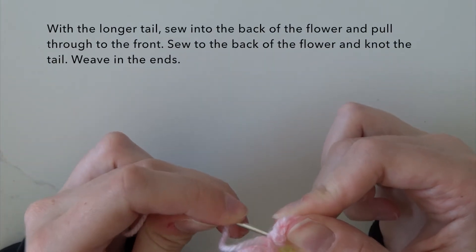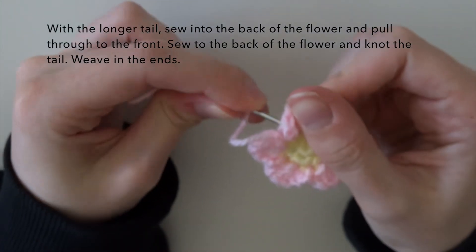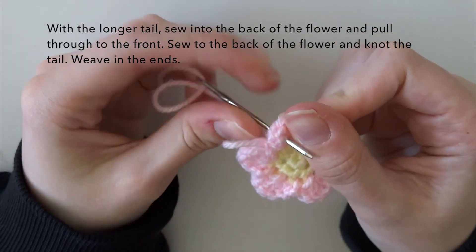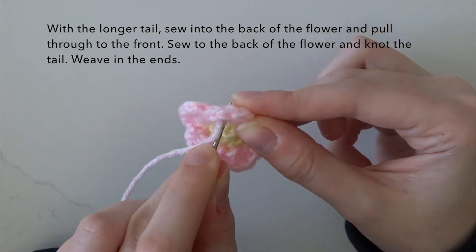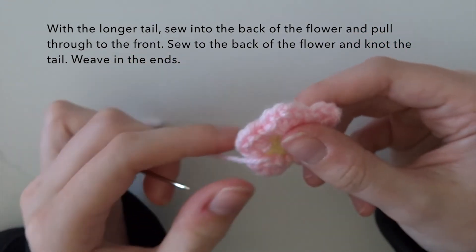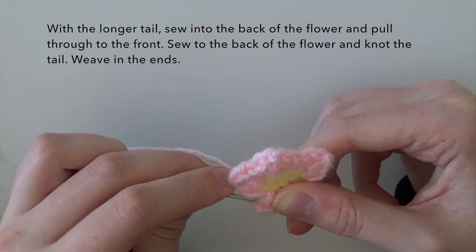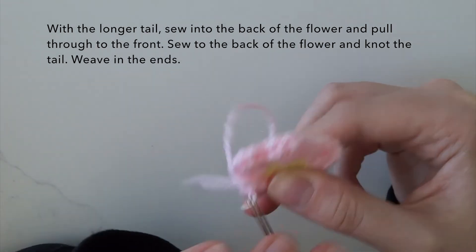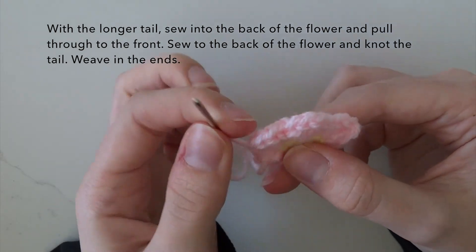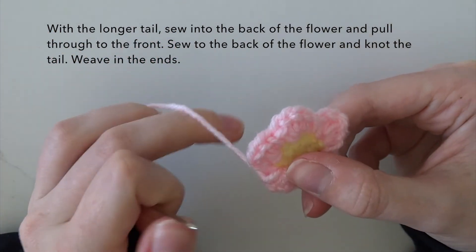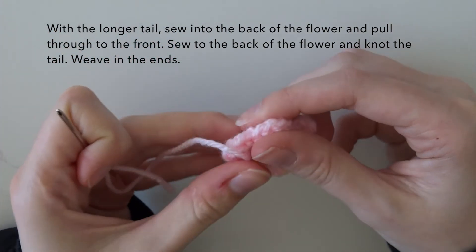With the final tail you want to sew from the back of the flower and pull it through to the front, and then sew from the front of the flower and take it to the back. You then want to fasten this together by creating a little loop and pulling through that loop. That creates a little knot. Then you just want to weave in the ends.